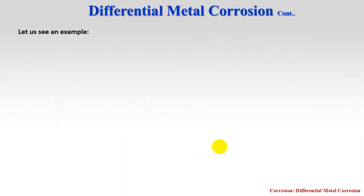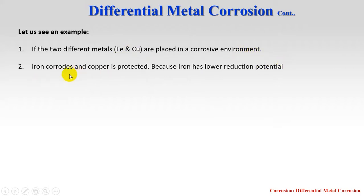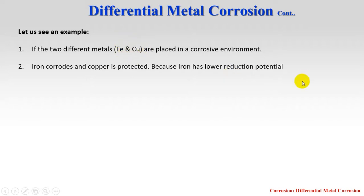Let us see an example. If two different metals such as iron and copper are placed in a corrosive environment, iron has a lower E⁰ value than copper, so iron behaves as the anode and undergoes oxidation — the metal corrodes very easily. Copper behaves as the cathode and is protected from corrosion.